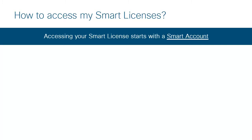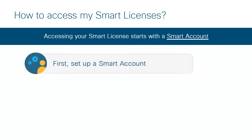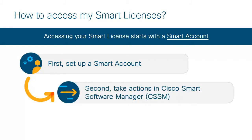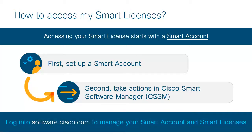To access your smart licenses, you need to first set up a smart account. After your smart account is set up, you can take actions in any of the portals that support smart licensing to manage these licenses. CSSM, or Cisco Smart Software Manager, is one of the portals that we will refer to throughout this video. You must log into software.cisco.com to set up a smart account or to access your smart licenses. Watch our smart account overview video to understand Cisco smart accounts; the link can be found in the description of this video.